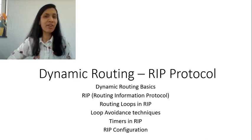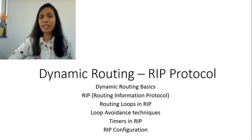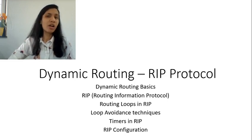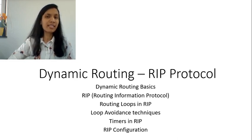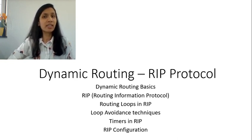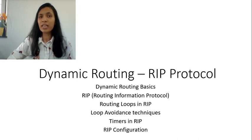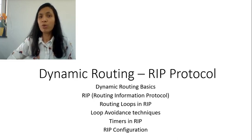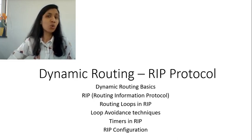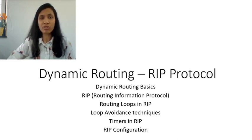RIP is a type of dynamic routing protocol. In this session, we will take a look at the basics of dynamic routing and how dynamic routing protocols are classified. Since RIP is an example of a distance vector type of dynamic routing protocol, we will look at what is meant by distance vector routing protocols and how they work. We will then look at the various features of RIP, what are routing loops in case of RIP, and the various loop avoidance techniques that can be used. And finally, we will look at the various timers in RIP.